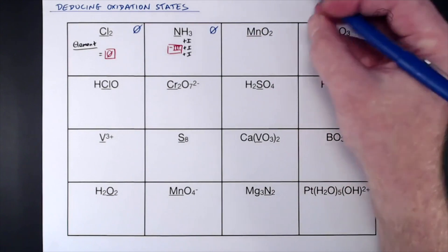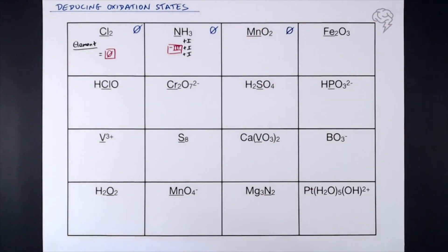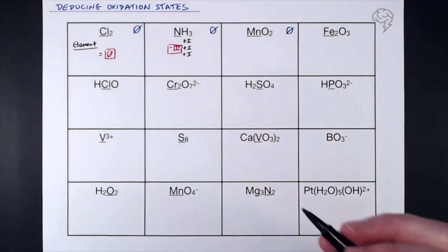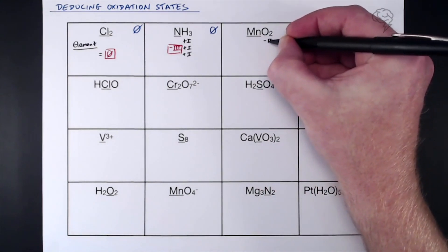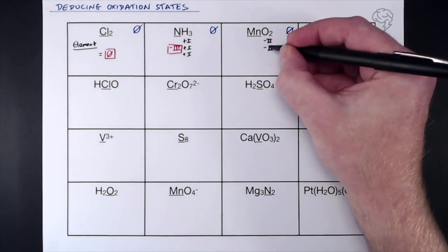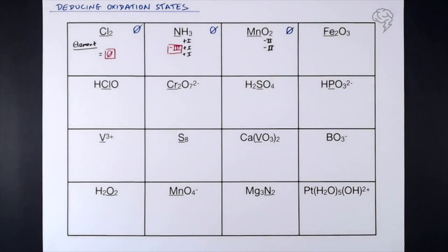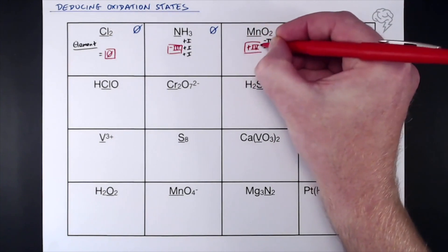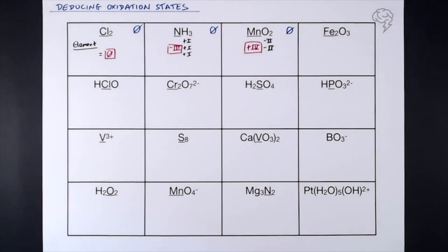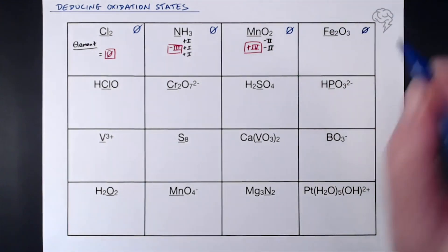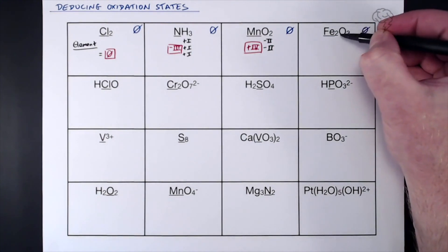Onto MnO₂ — overall oxidation state zero again. We're looking to find Mn. Oxygen most of the time has a −2 oxidation state, so we've got two lots of −2. To counteract those, the manganese must be +4. So that's our oxidation state of manganese in this compound.